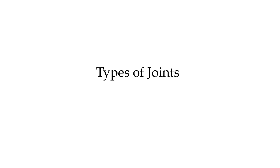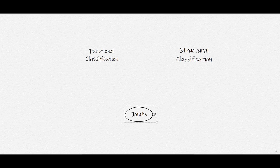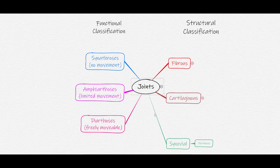Now we can look at joints according to their functional and structural classification. Joints can be classified functionally as having no movement, limited movement, or freely movable. For structural classification, there are three types of joints: fibrous, cartilaginous, and synovial joints.